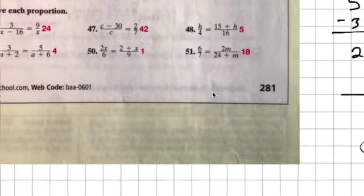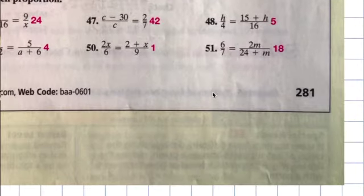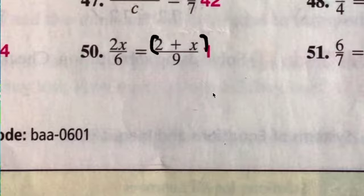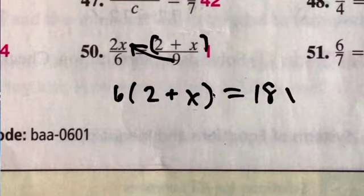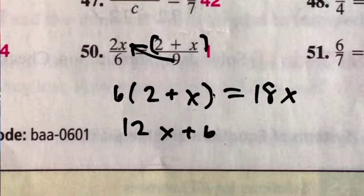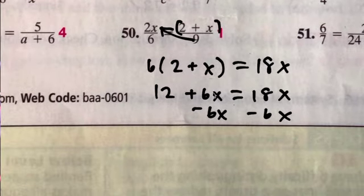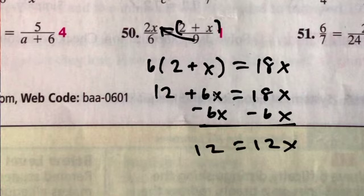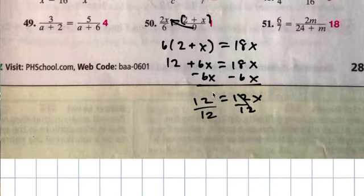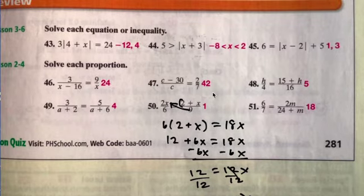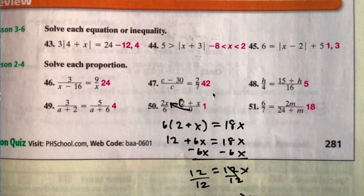I'll do number 50. The answer is one. 6 times parentheses 2 plus x equals to 18. Multiply that: 12 plus 6x. Minus 6x minus 6x, 12 equals to 12x. Divide by 12, that's how they get 1 as an answer. So those are the answers. I think this is the easiest way for me to show you the answer, the red ones.